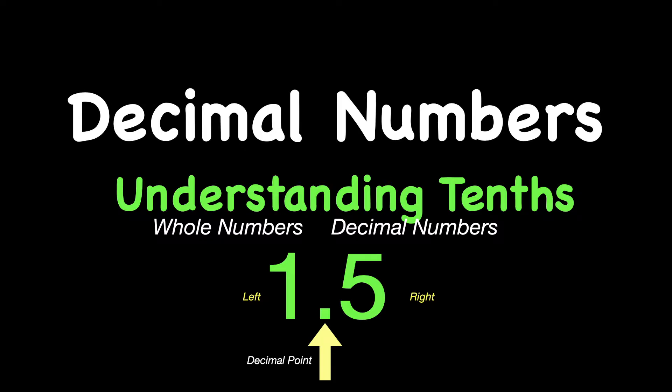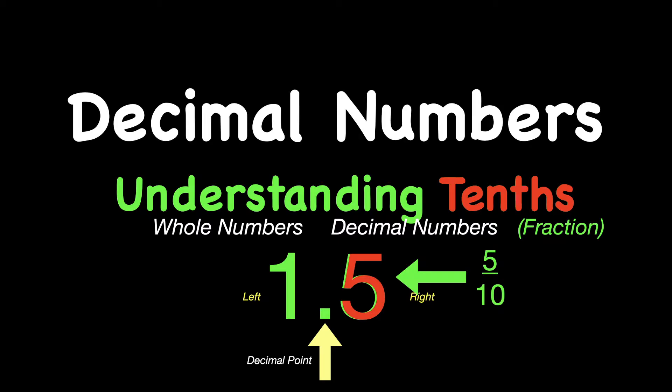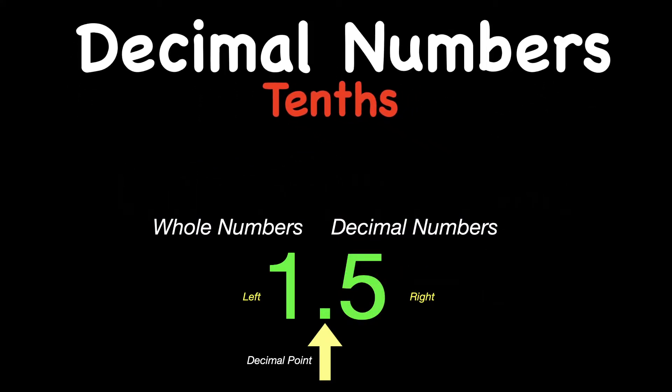Decimal numbers really are just fractions. So for example, do you see that 5? That 5 actually represents the fraction 5 tenths. The place value of the 5 is in the tenths, and that's the focus of our lesson today.